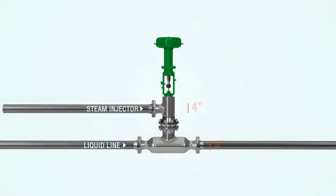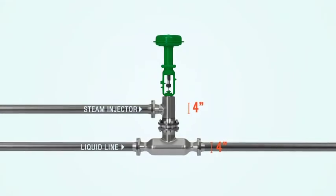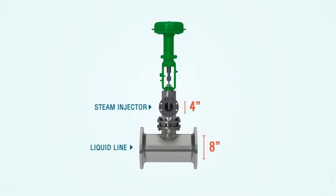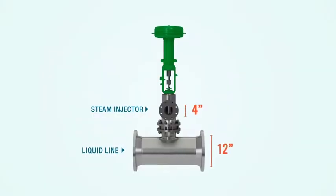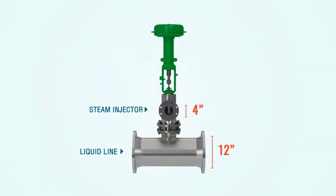The Prosonix heater can be sized to match your liquid pipe and process conditions. Maintaining pipe size eliminates flow disruptions, reduces pressure drop, and simplifies your piping, reducing your installation and operating costs.